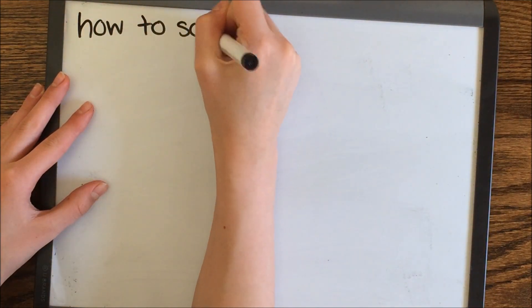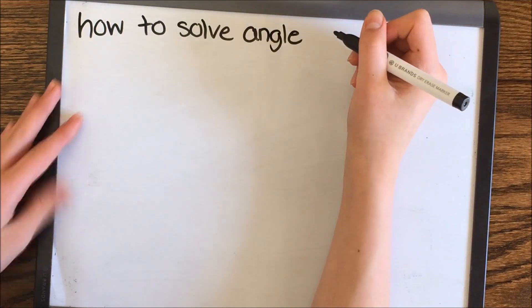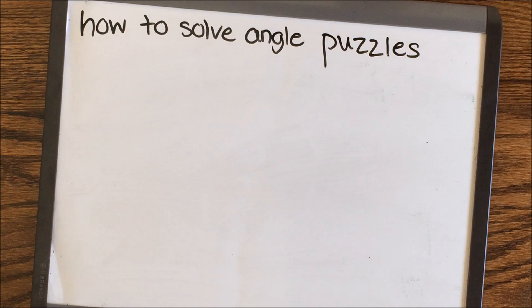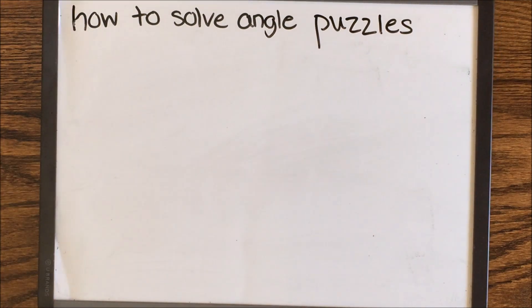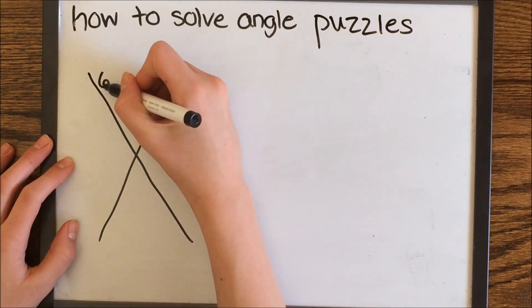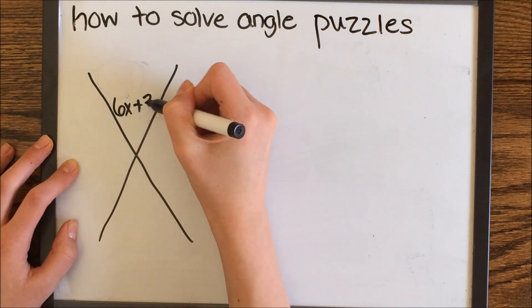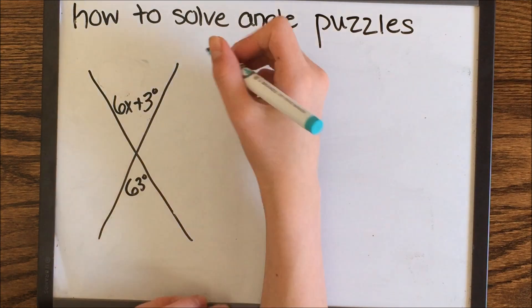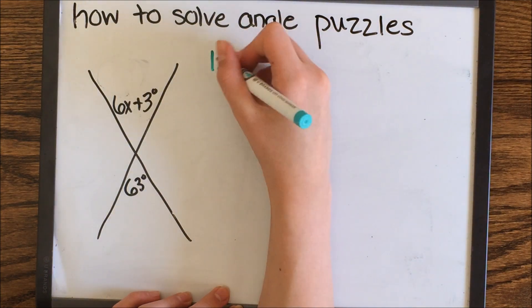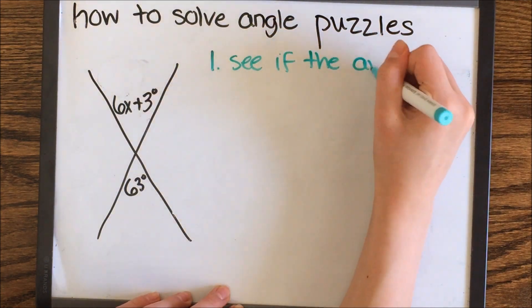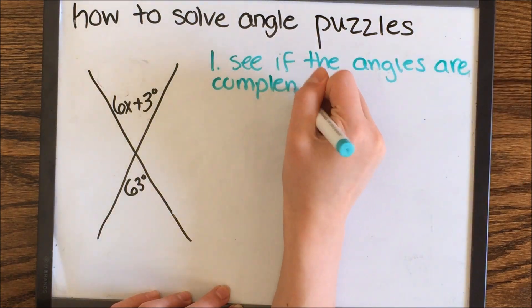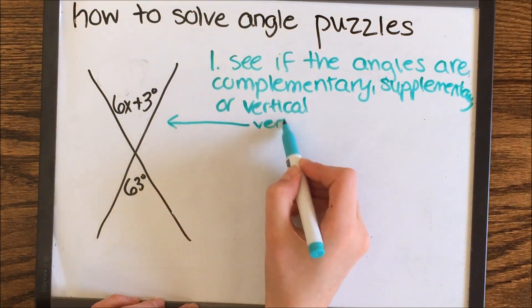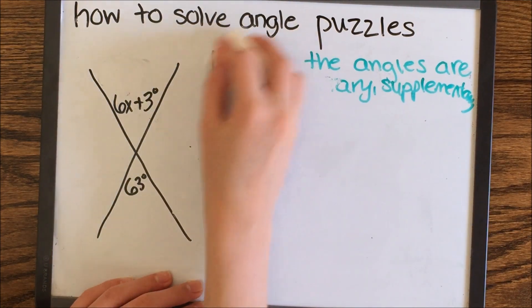Now that we defined all the terms, I'm actually going to show you how to solve a couple of angle puzzles. These are what you're actually going to be solving. Here, these are our vertical angles. The first step is to see if the angles are complementary, supplementary, or vertical, because each one of those are solved differently. These angles are vertical.